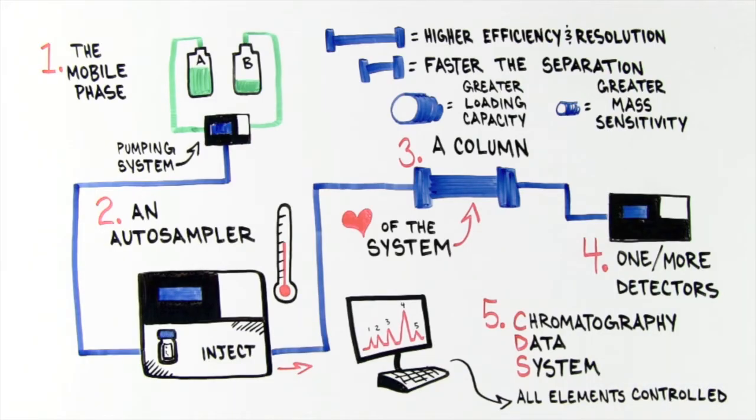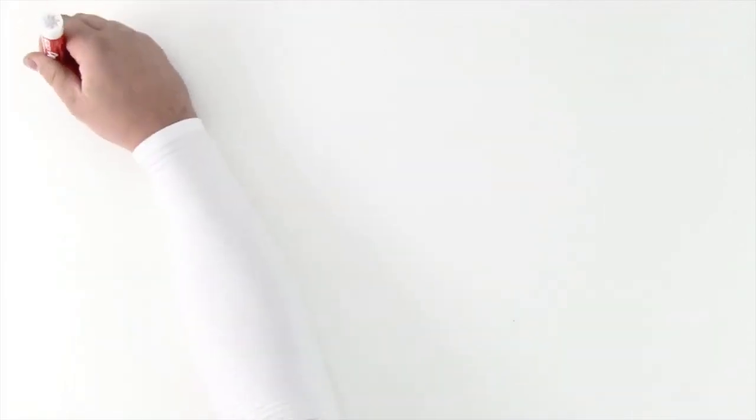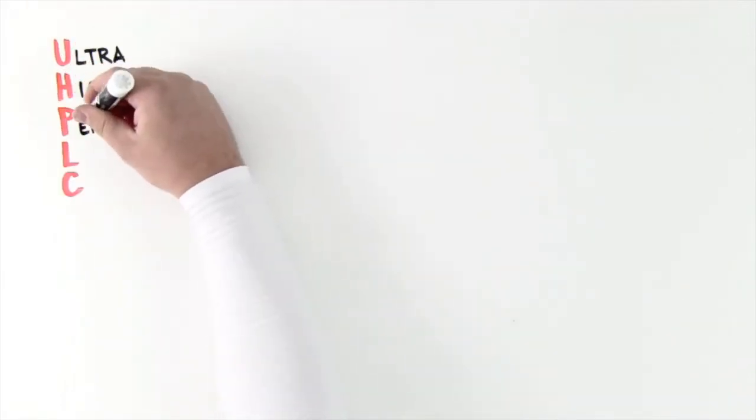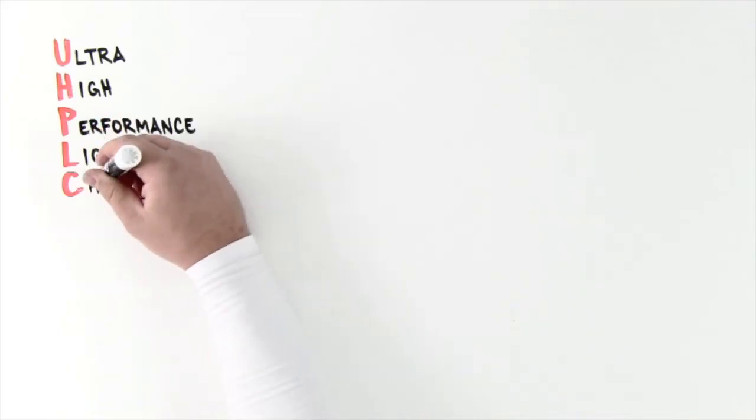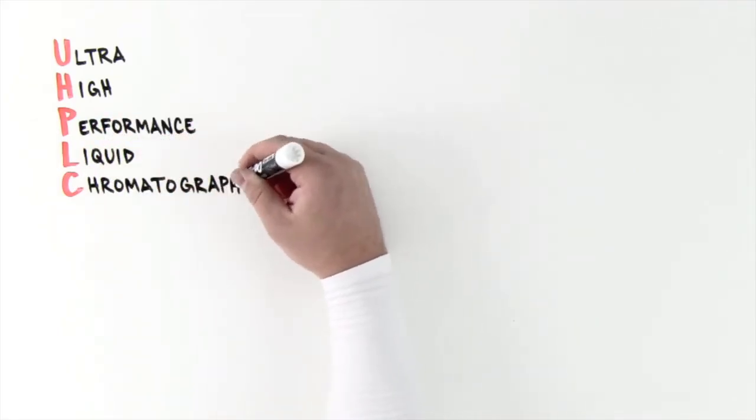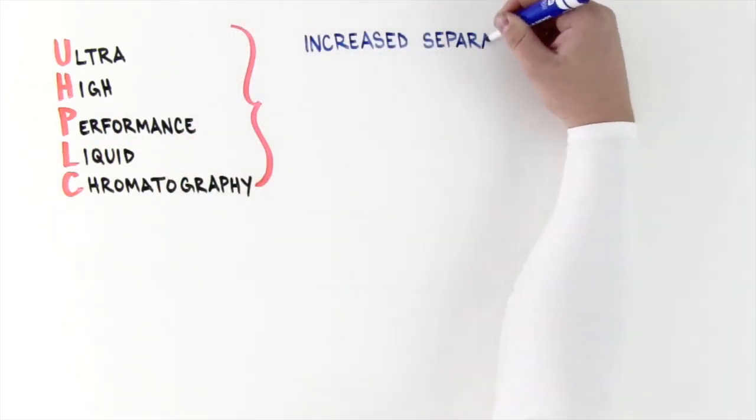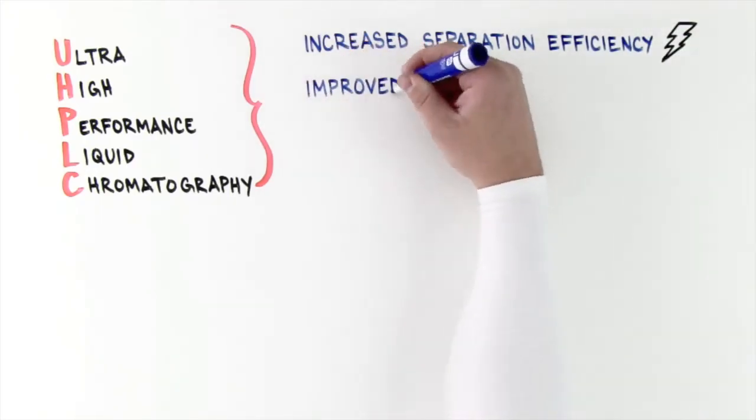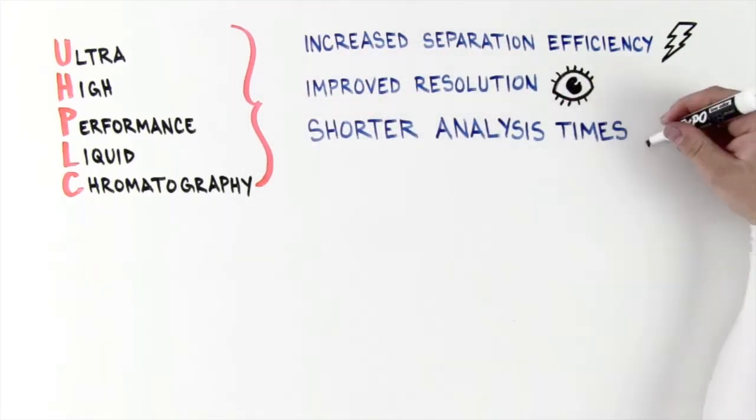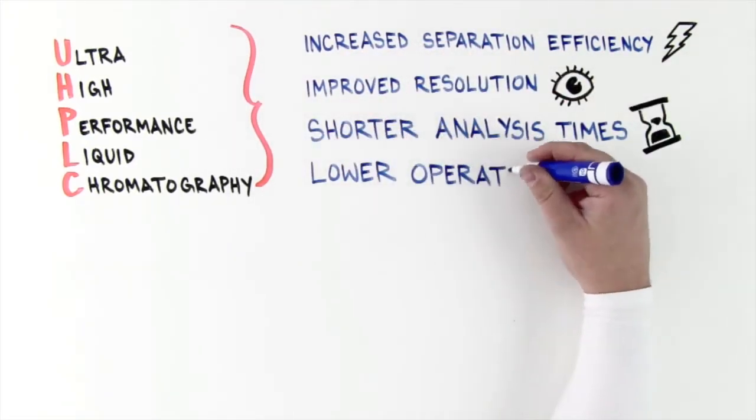What is UHPLC? UHPLC, or Ultra High Performance Liquid Chromatography, is a technique that can achieve increased separation efficiency, improved resolution, shorter analysis times, and lower operating costs.